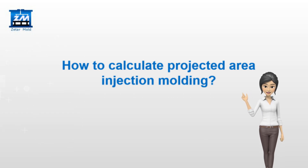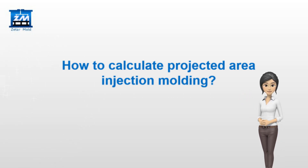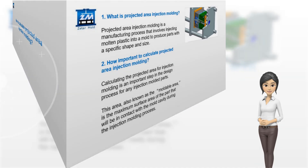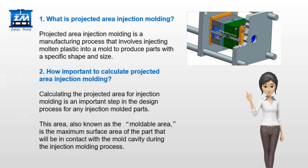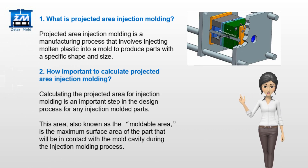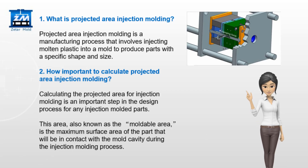How to Calculate Projected Area Injection Molding. Projected Area Injection Molding is a manufacturing process that involves injecting molten plastic into a mold to produce parts with a specific shape and size.